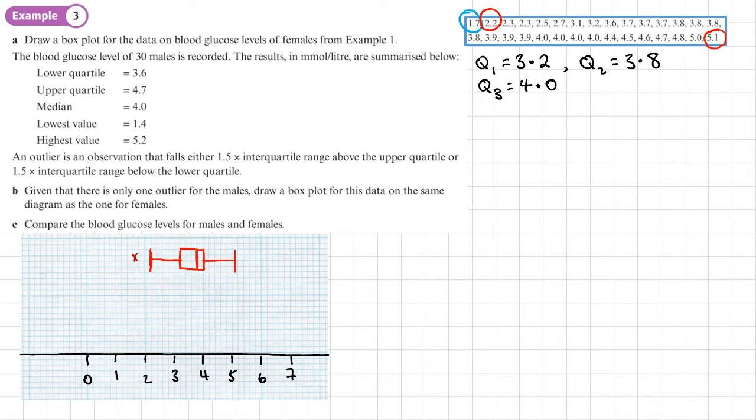In part B, I've now got the blood glucose levels for 30 males. The results are summarized here. It says an outlier is an observation that falls either 1.5 times the interquartile range above or 1.5 times the interquartile range below. Given that there is only one outlier for the males, draw the box plot for this data on the same diagram. Let's start by working out what that outlier is.